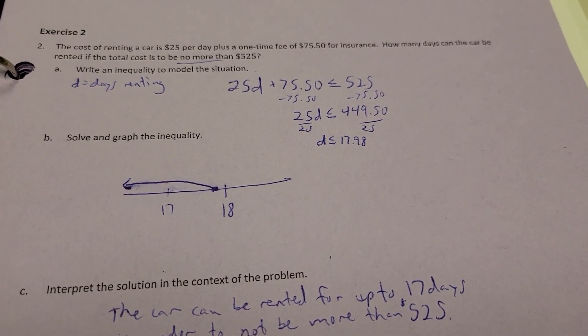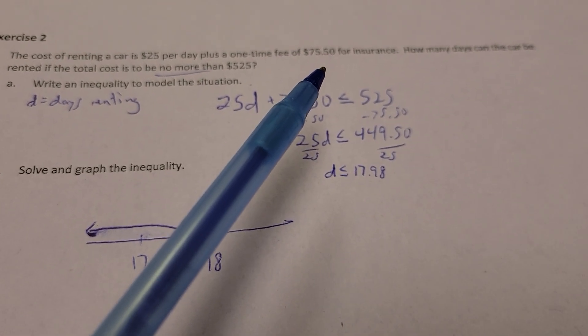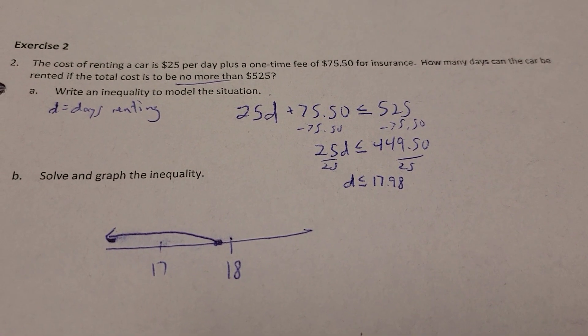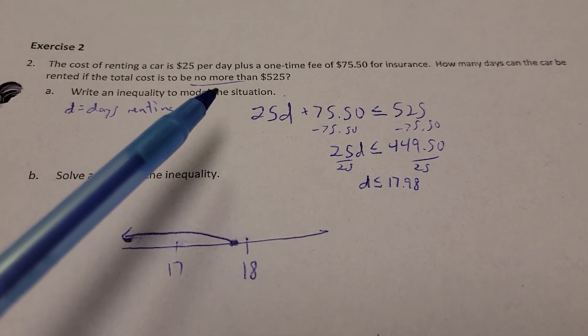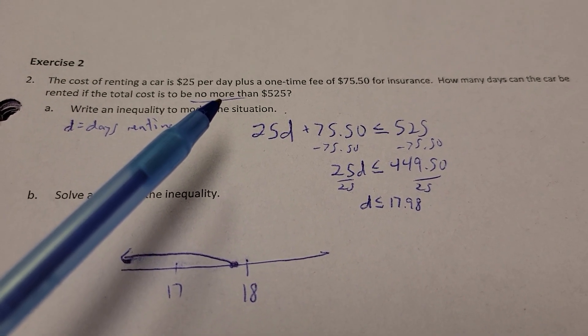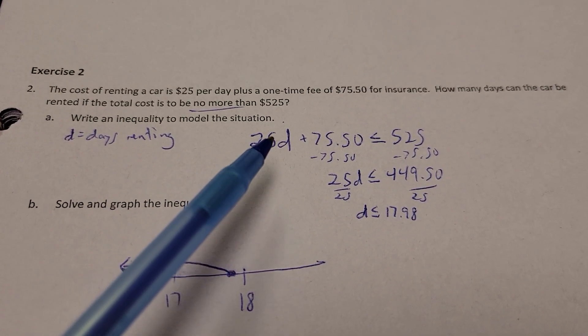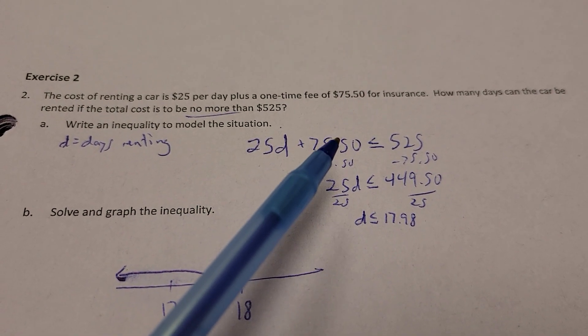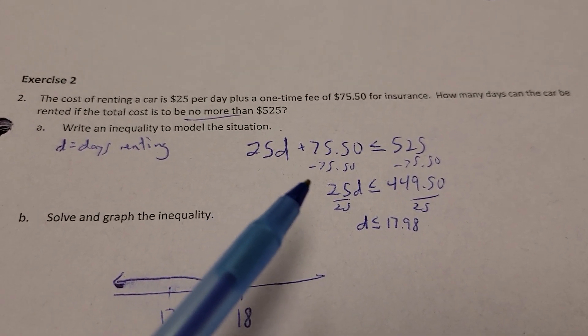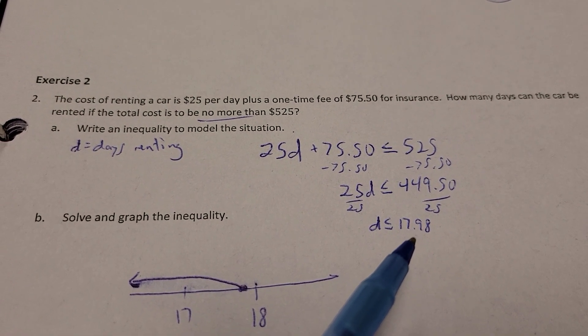Alright, next up. The cost of renting a car is $25 per day plus a one-time fee of $75.50 for insurance. How many days can the car be rented if the total cost is to be no more than $525? So, it can be $525 or less, but just not more than that. So, we'll use D for days renting. So, $25 times however many days plus that $75.50 fee. We want that to be less than or equal to $525. So, solve it just like a normal equation. We get D is less than or equal to $17.98.